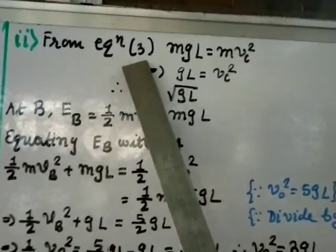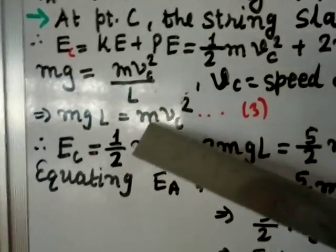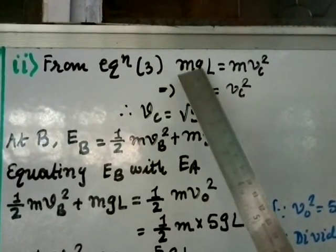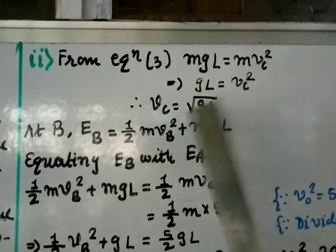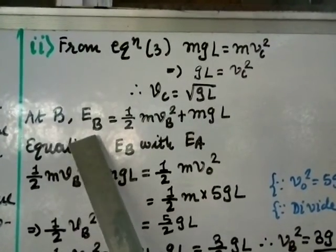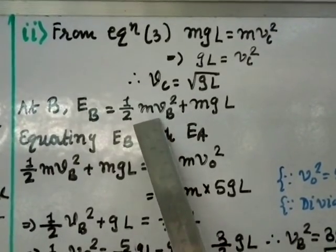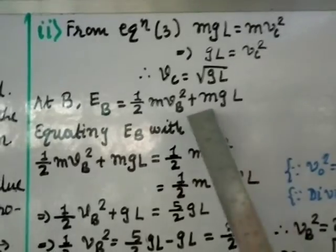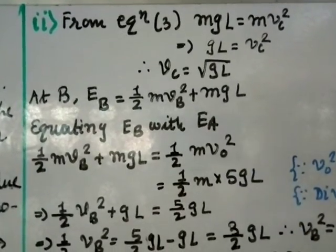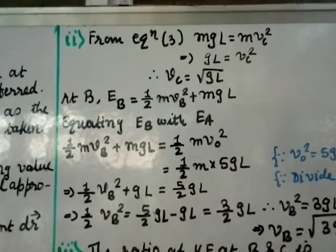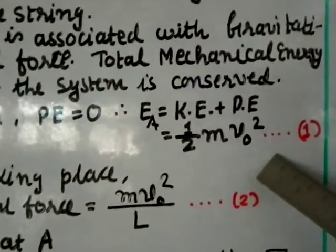For part two, from equation (3): mgL = mv_C², so v_C² = gL, giving v_C = √(gL). At point B, the total energy is E_B = ½mv_B² + mgL, since the height at B is L.